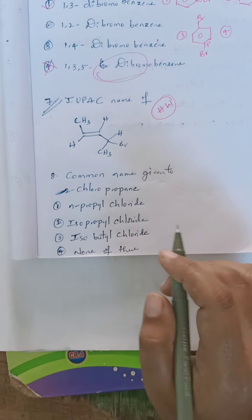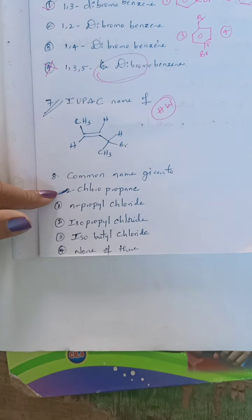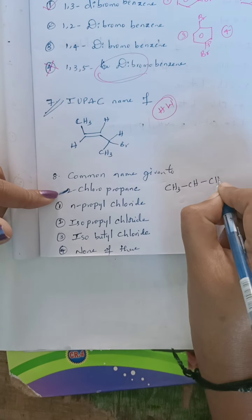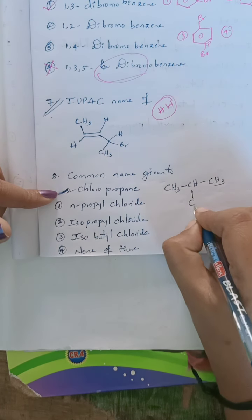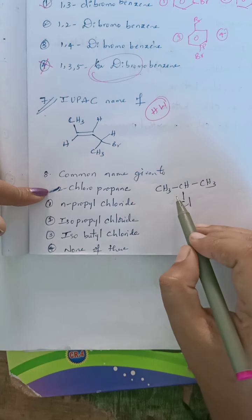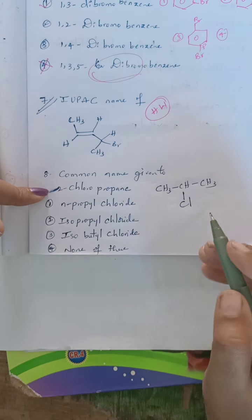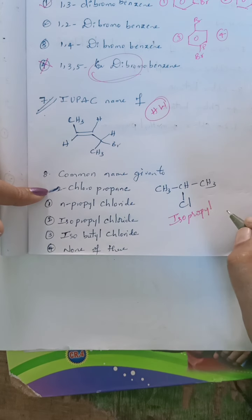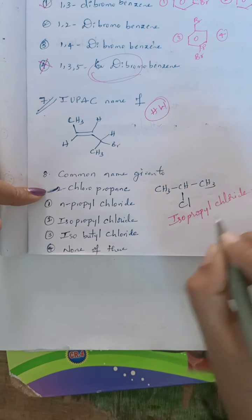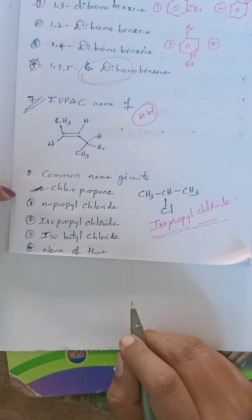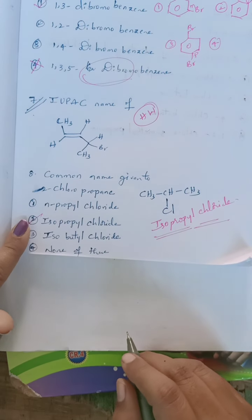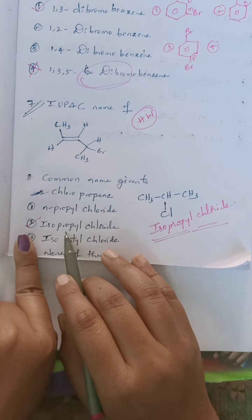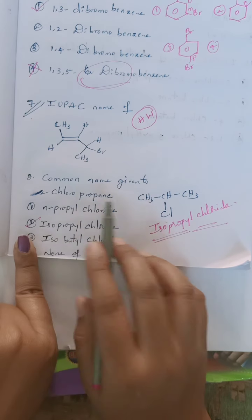Eighth question: what is the common name given to 2-chloropropane? Write down the structure of 2-chloropropane — propane has three carbons, and chlorine is at the second position, i.e., at the secondary carbon. When chlorine is at the secondary carbon of propane, it is known as isopropyl chloride in the common system. So the answer is isopropyl chloride — that is the second option.